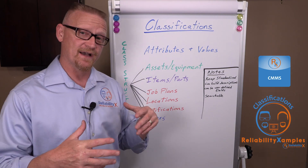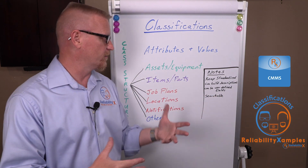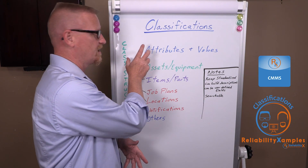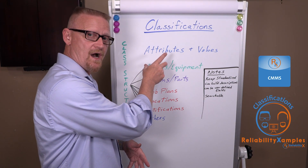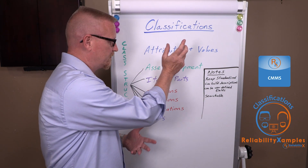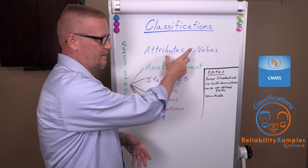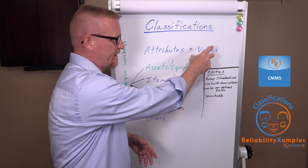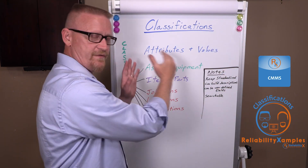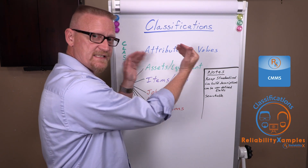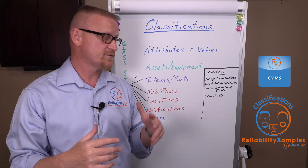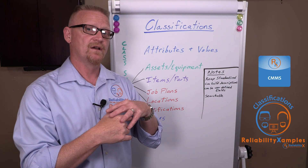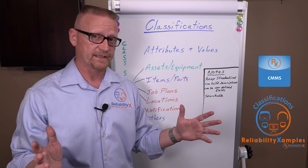Using our AC motor example: if I fill out those attributes, my description becomes 'motor, AC, 150 horsepower, frame size' — and so on. That becomes standardized, and all of your descriptions where you've applied the classification system will be standardized immediately.